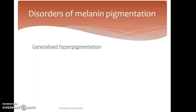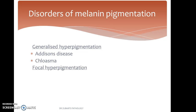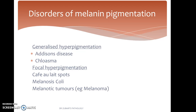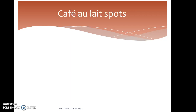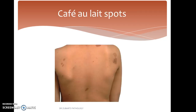Disorders of melanin pigmentation include Addison's disease due to adrenal insufficiency, chloasma, and focal hyperpigmentation such as cafe-au-lait spots and melanosis coli. Melanotic tumors such as the dreadful melanoma, and lentigo are also disorders of melanin. Melasma is a condition associated with pregnancy and can be of cosmetic concern. Cafe-au-lait spots are brownish pigmentations seen in association with conditions like neurofibromatosis.